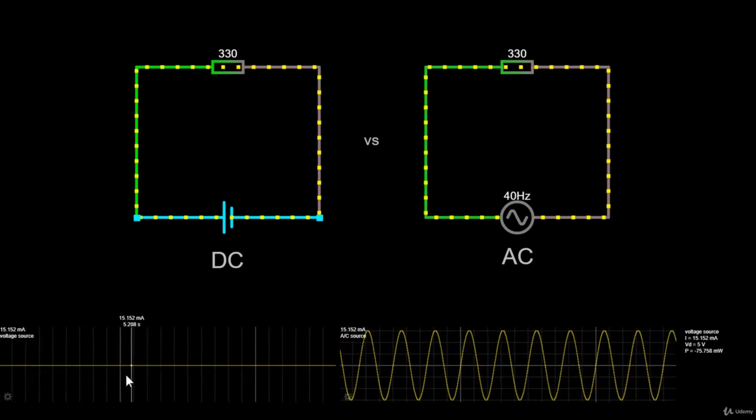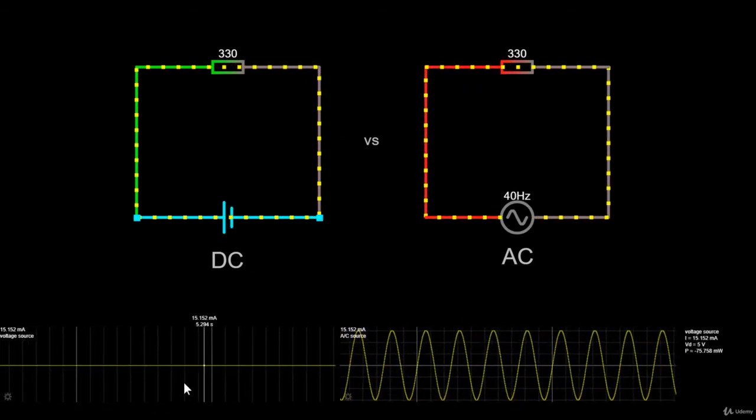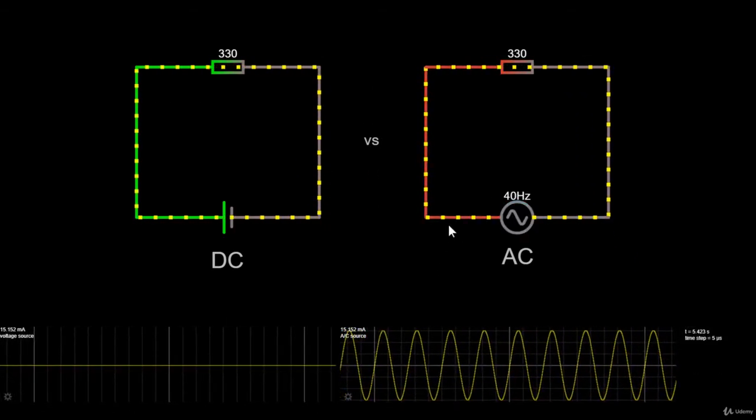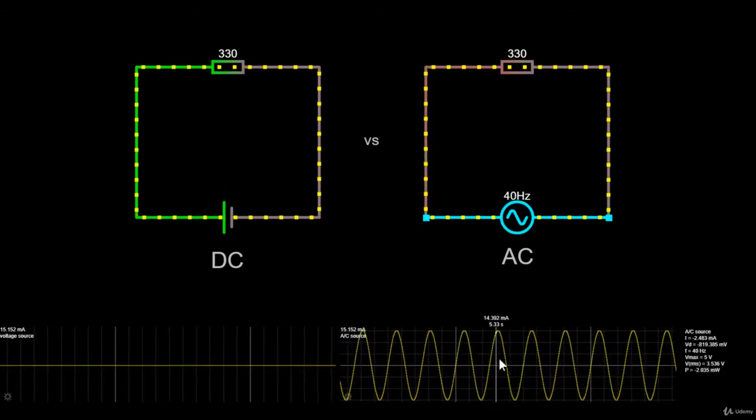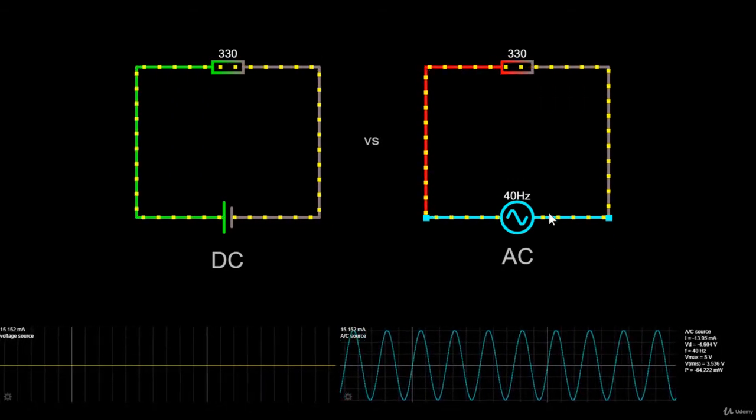In direct current, or DC, the electric charge, which is the current, flows in one direction, right? Electric charge in alternating current, or AC, on the other hand, changes direction periodically. The voltage in AC circuits also periodically reverses because the current changes direction.